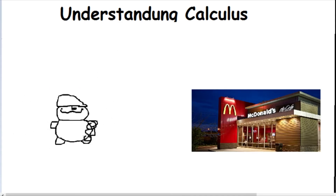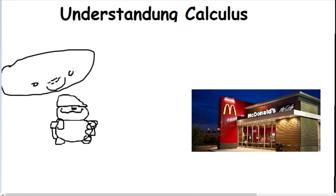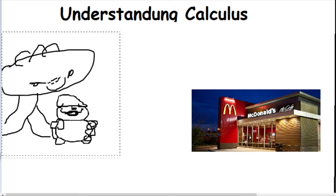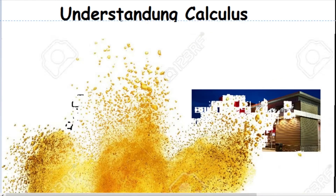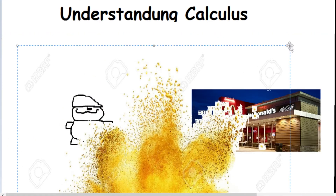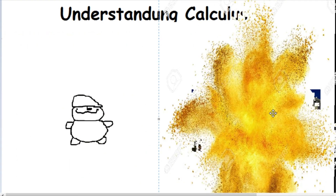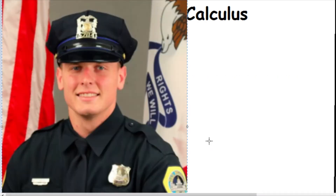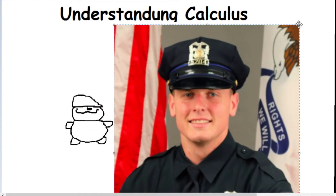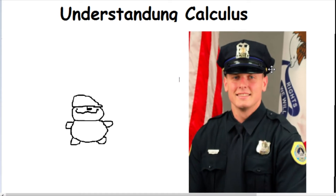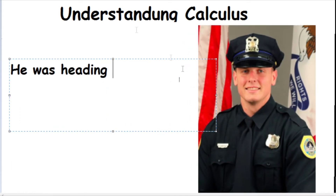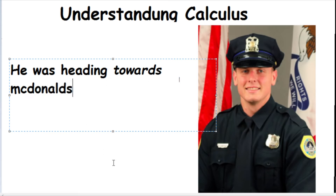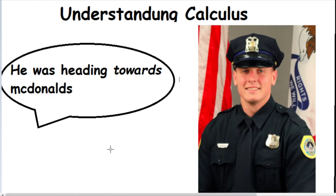What if this little boy was going to McDonald's and he was sadly abducted — he never really made it. Or the McDonald's somehow blew up. But if a police officer asked you where the little boy was heading, you'd say he was heading towards McDonald's. So the limit is still McDonald's, even if he never arrived.